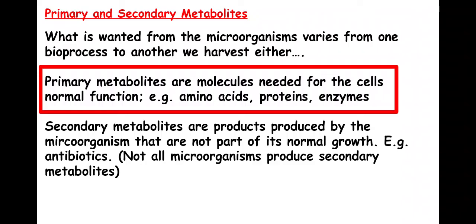Primary metabolites are molecules needed for the cell's normal function, so this might be amino acids, proteins, or enzymes. However, secondary metabolites are things that are not normally part of normal growth, such as antibiotics or insulin hormones. These might be produced by the microorganism as a result of genetic engineering.